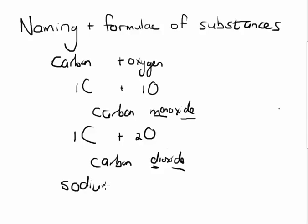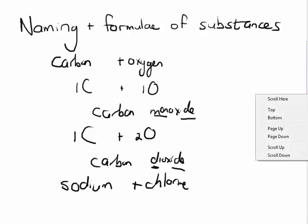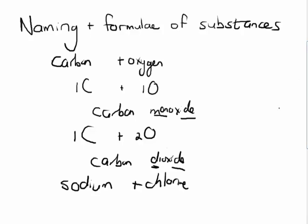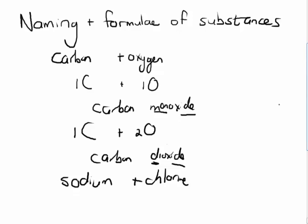If we take sodium and chlorine and we add them together, if you look at your periodic table, you'll notice that sodium is a metal and chlorine a non-metal. So according to our rules, sodium must go first in the name and chlorine second. So if we have one sodium and one chlorine, it's going to be sodium chloride, ending with I-D-E because we are adding two elements together.